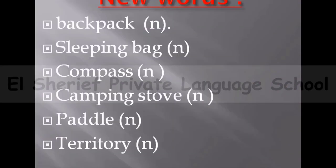Now we have some new words in this unit. Number one: backpack — it's a noun and it means a rucksack. For example: he was wearing a heavy backpack. Number two: sleeping bag — it's a noun and it means a thick, warm bag used for sleeping in, for example when you are camping. Number three: compass — it's a noun and it's an instrument for finding directions.